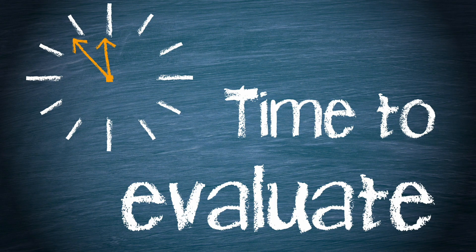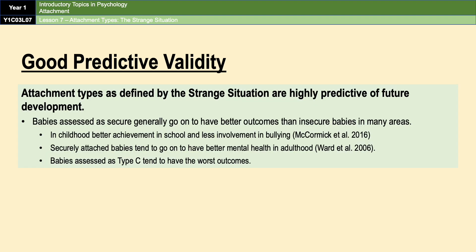One strength of the strange situation is that its outcome predicts a number of aspects of the baby's later development. Research has shown that babies assessed as secure tend to have better outcomes in both childhood and adulthood — for example, better school achievement, less involvement in bullying, and better mental health in adulthood. Babies assessed as having insecure resistant attachment tend to have the worst outcomes, suggesting the strange situation is measuring something real and meaningful in a baby's development — it has good predictive validity.